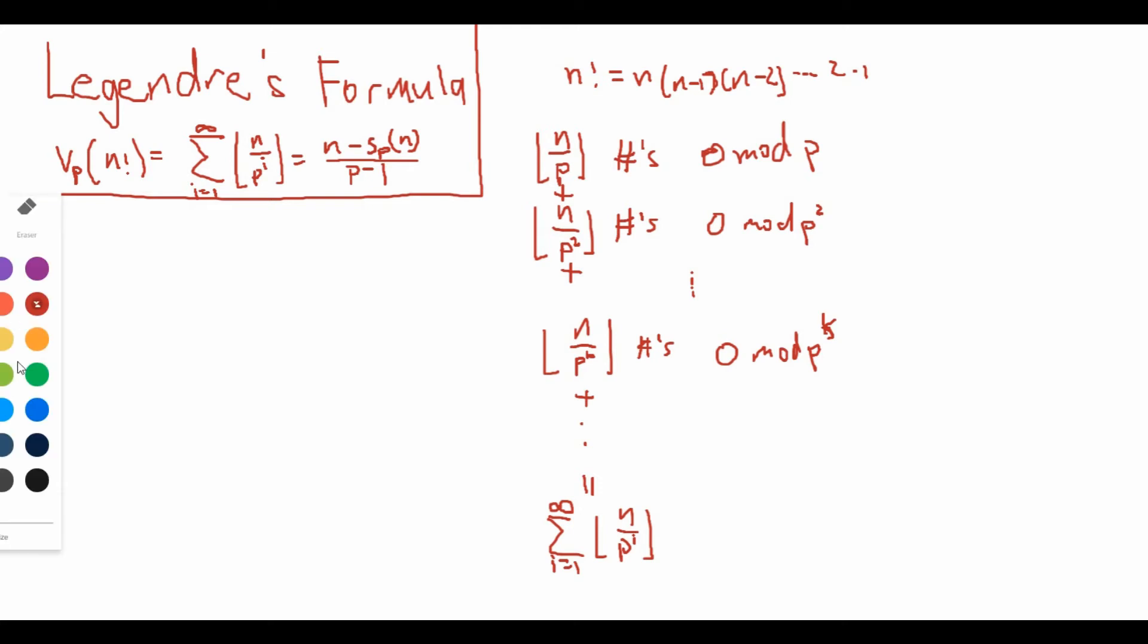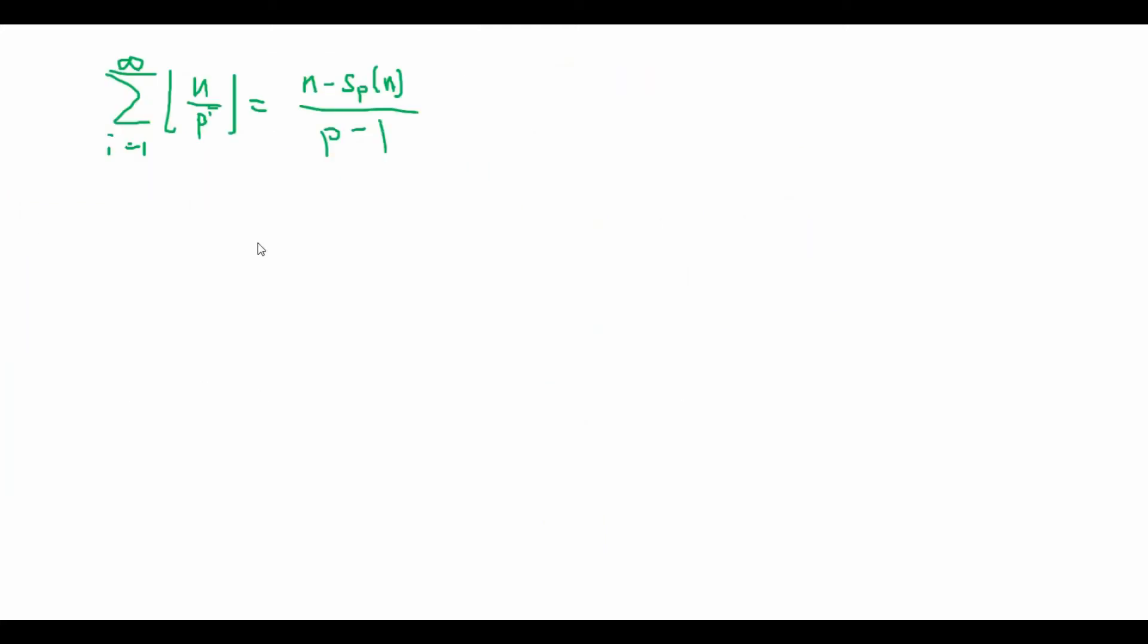Now, for the second equation. Alright, so for the second part, we need to prove that the summation from i equals 1 to infinity of the floor of n over p to the power of i is equal to n minus sp of n over p minus 1, where sp of n is just the sum of the digits of n in base p. So in order to work with this sp of n, let's just represent n in its base p format, which is just n sub x times p to the power of x plus n sub 1 times p plus n sub 0.